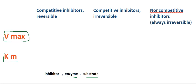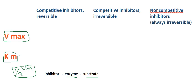Coming to Km, it is known as the Michaelis-Menten constant. What this means is the substrate concentration at which the velocity of the reaction is equal to half Vmax. Km is also inversely proportional to the affinity between enzyme and substrate.